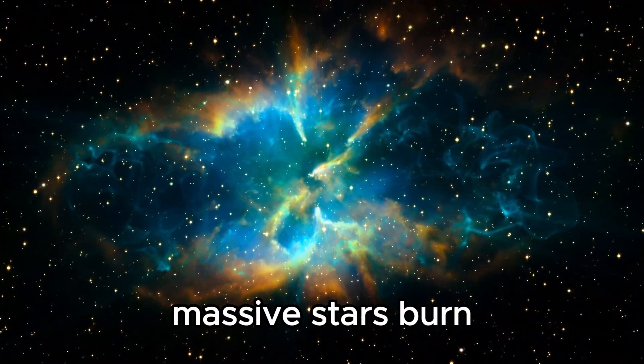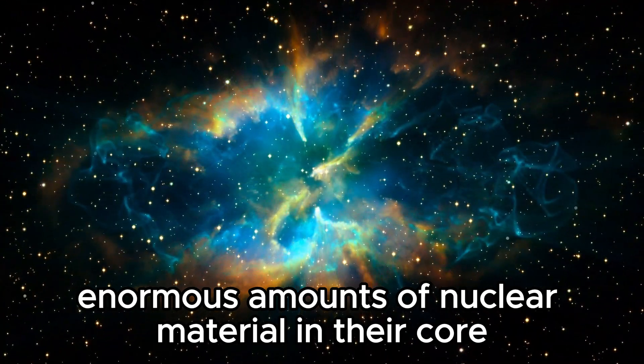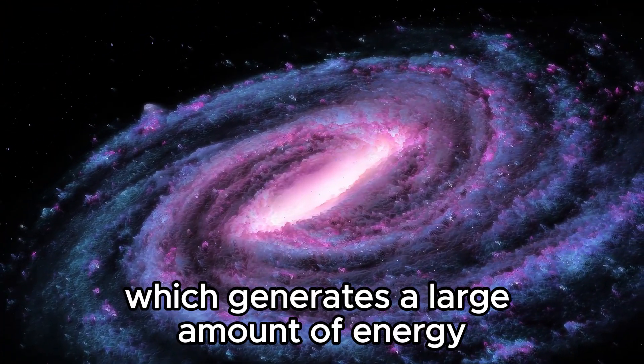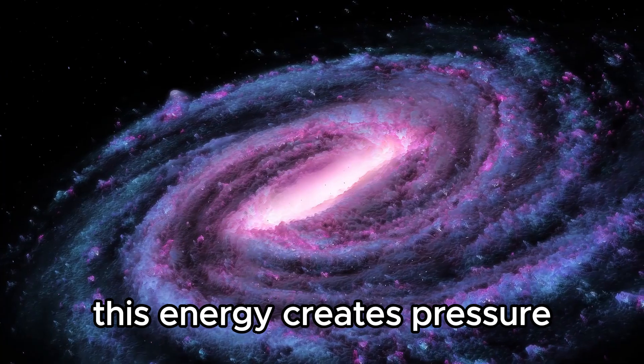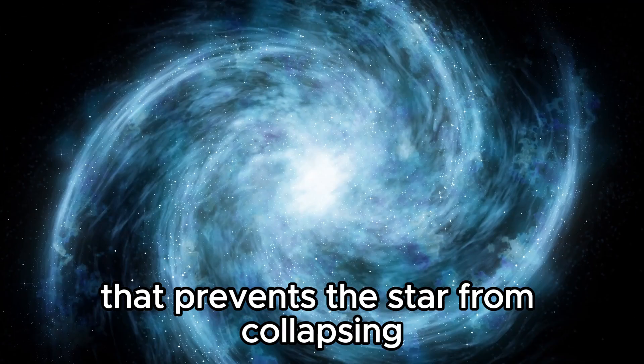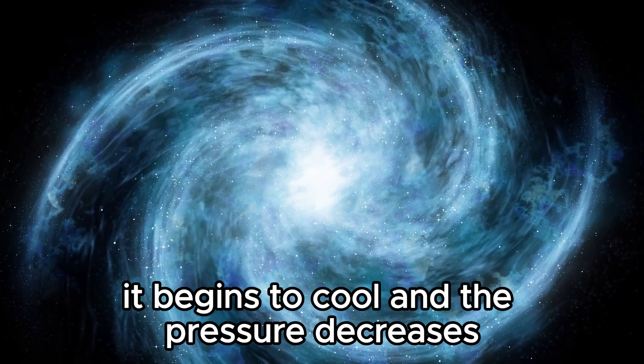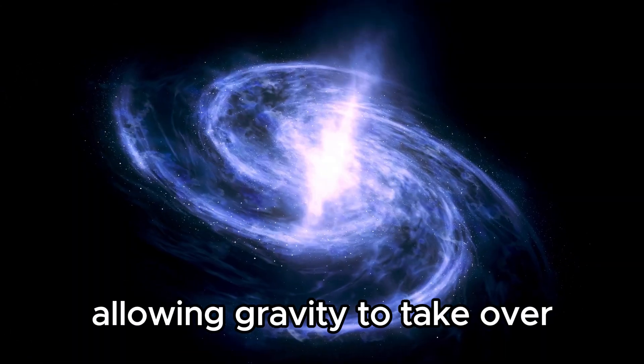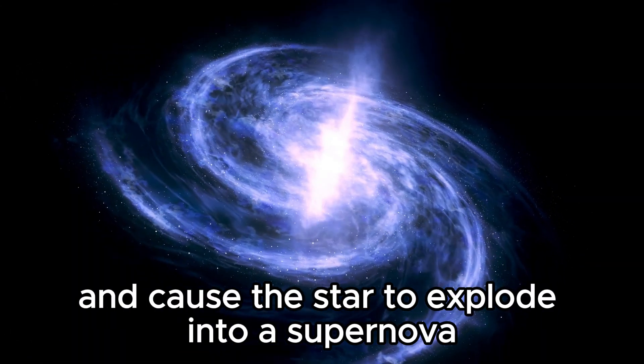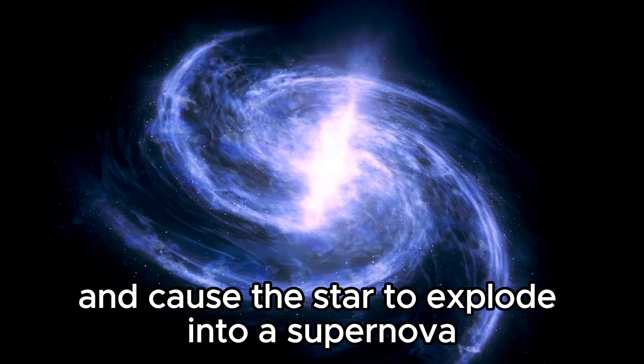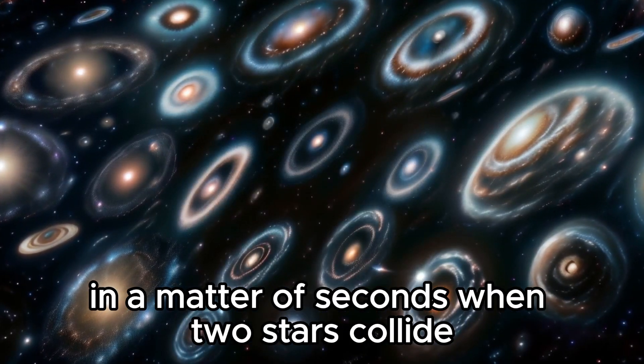Massive stars burn enormous amounts of nuclear material in their core, which generates a large amount of energy. This energy creates pressure that prevents the star from collapsing. When the star runs out of fuel, it begins to cool and the pressure decreases, allowing gravity to take over and cause the star to explode into a supernova. This process happens quickly, in a matter of seconds.